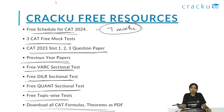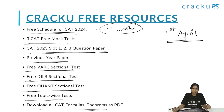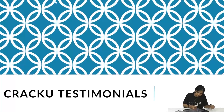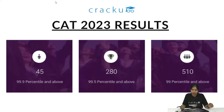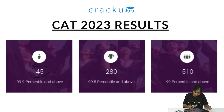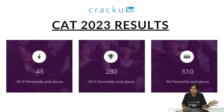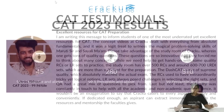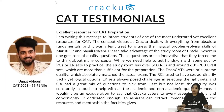If anyone is planning to enroll for the CAT 2024 seven-month sublime batch, details will be provided in the description below. Coming to testimonials — in CAT 2023, 45 students got 99.9 percentile and above, 280 students got 99.5 percentile and above, and 15 students got 99 percentile and above. You can go through the testimonials and reviews provided by recent students who gave their CAT 2023.